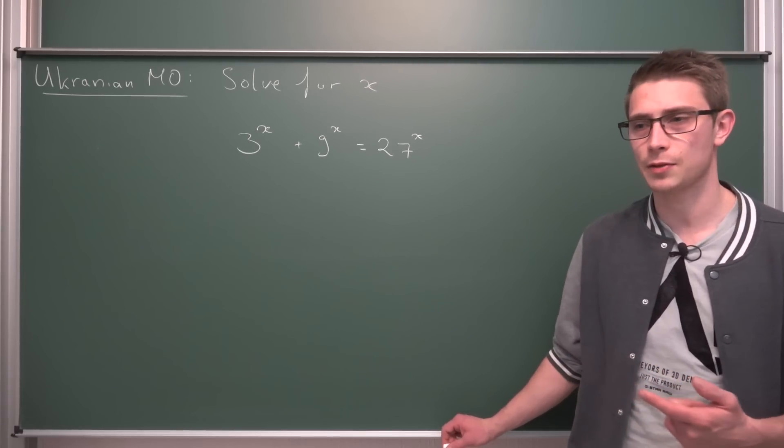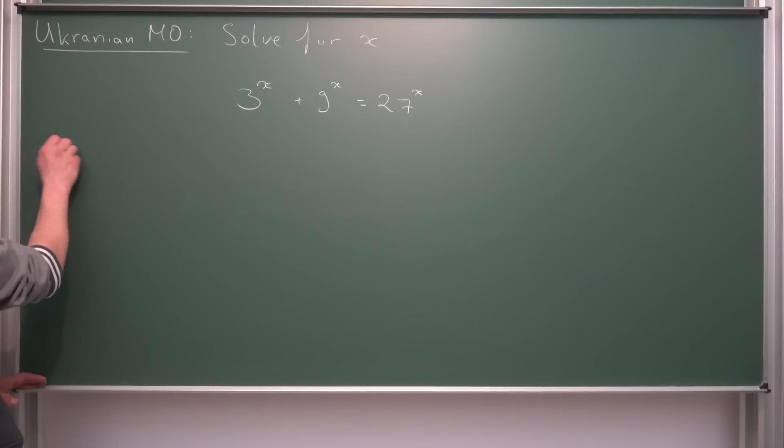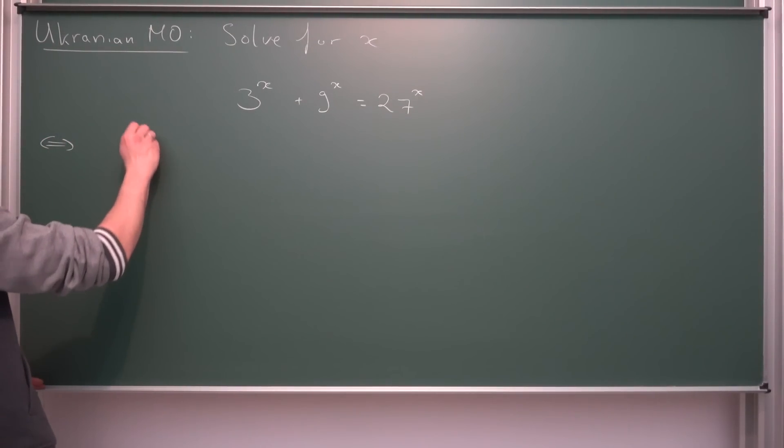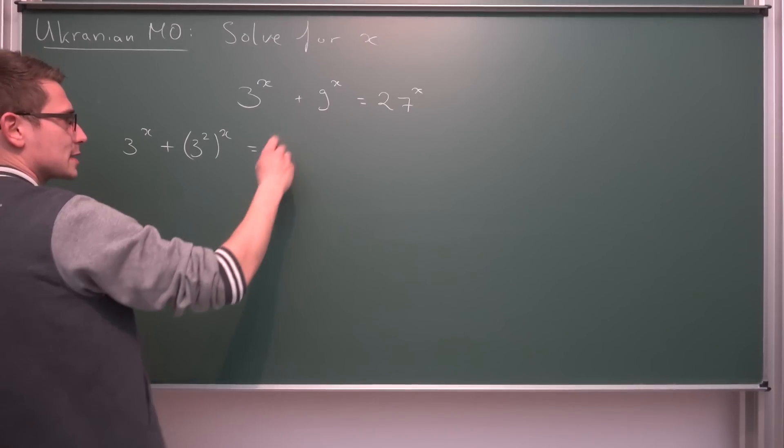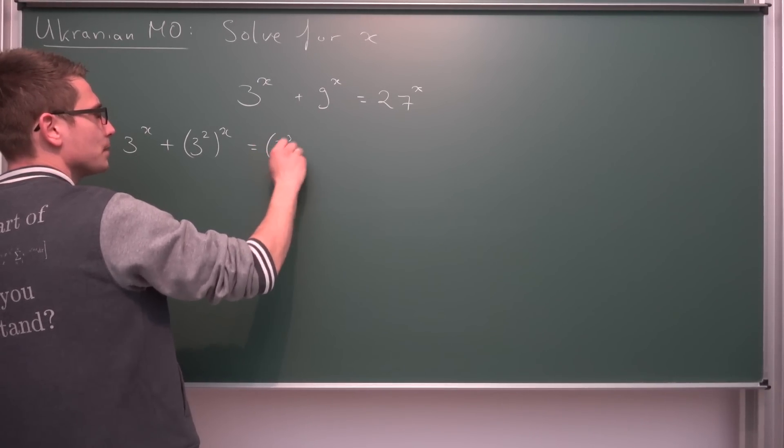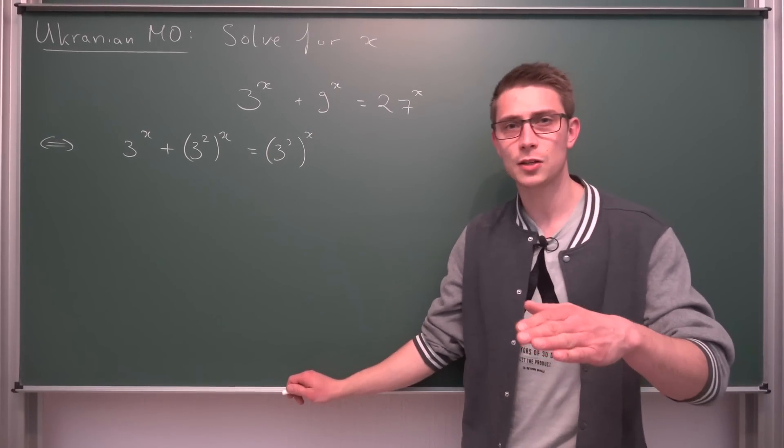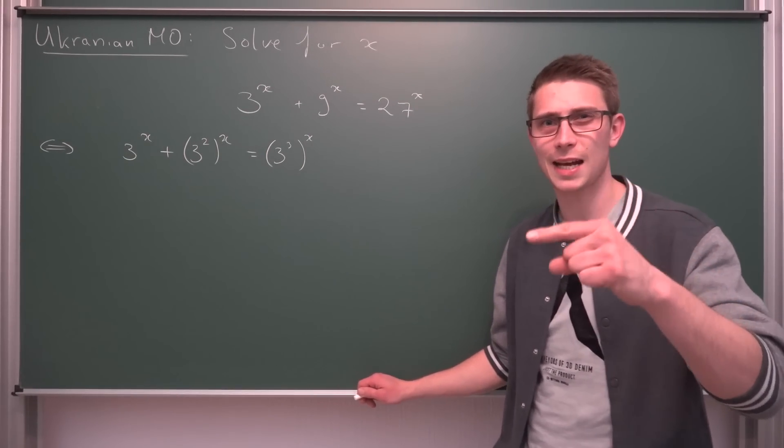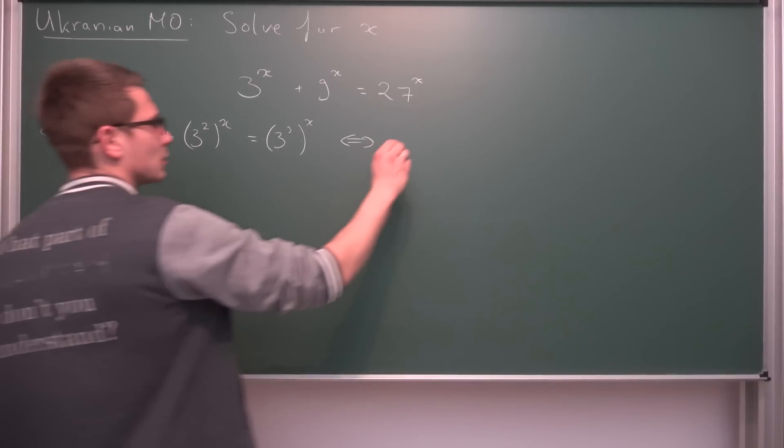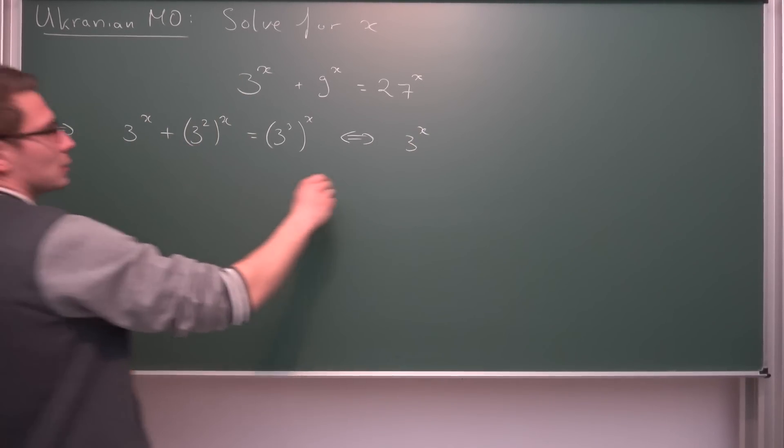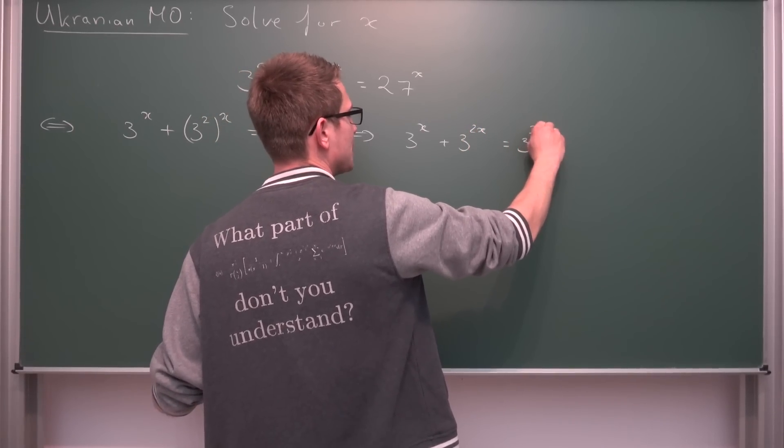3 is 3 to the first power and 27 is 9 times 3, so 3 to the third power. So let's rewrite this equation, try a little bit, into 3 to the x plus, 9 is 3 squared to the x power is hence equal to 3 cubed to the x power. Now we can make use of exponentiation rules. If you have a to the b to the cth power, this is the same as a to the b times cth power. Meaning, we can rewrite this equivalently as 3 to the x, and then we are going to get plus 3 to the 2x is equal to 3 to the 3x.